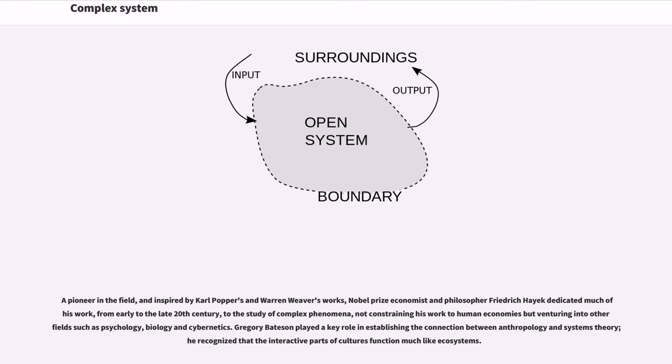A pioneer in the field, and inspired by Karl Popper's and Warren Weaver's works, Nobel Prize economist and philosopher Friedrich Hayek dedicated much of his work, from early to the late 20th century, to the study of complex phenomena, not constraining his work to human economies but venturing into other fields such as psychology, biology and cybernetics. Gregory Bateson played a key role in establishing the connection between anthropology and systems theory; he recognized that the interactive parts of cultures function much like ecosystems.